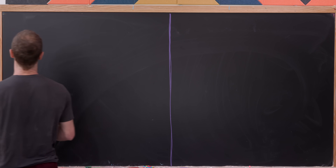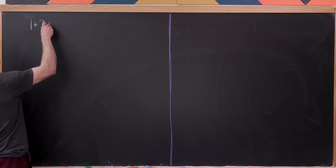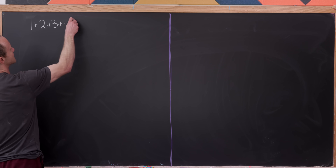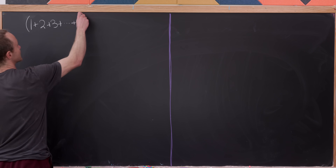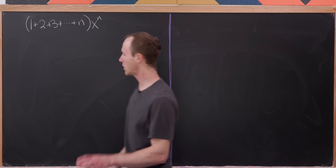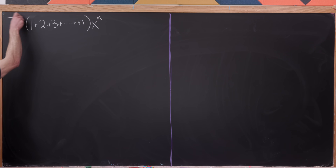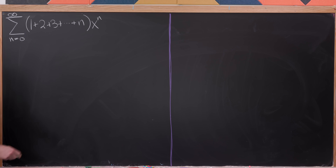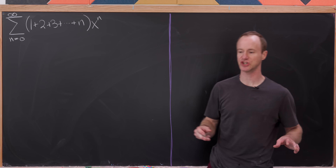Let's start with the sum of the first n natural numbers: one plus two plus three, dot dot dot, up to n. What I'm going to do is take this whole thing and multiply it by x to the n, and then take the sum as n goes from zero to infinity. What we're constructing here is something called a generating function.